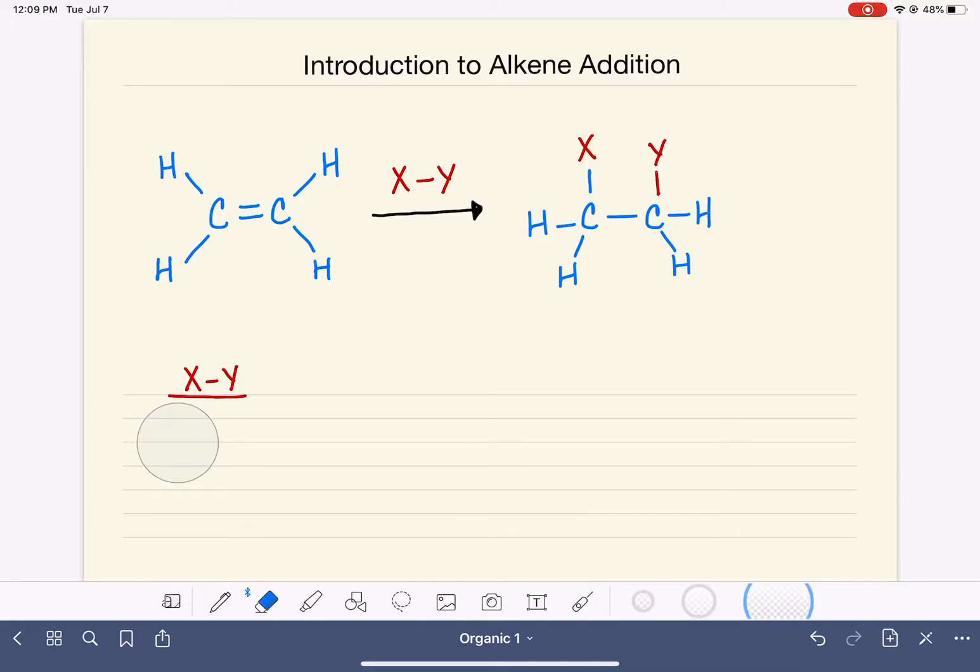As I said, there is a variety of different things that can be used as the XY reactant in the alkene addition reaction. For example, X and Y could be HX, such as HCl or HBr.